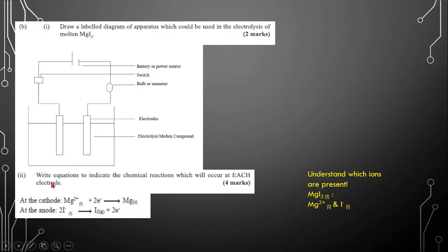Next, write equations to indicate the chemical reactions which will occur at each electrode. So before you do this, you need to understand which ions are present in this solution. Now when you see molten magnesium iodide, that means magnesium iodide is in the liquid state and it's going to break up into magnesium cation and the iodide anion.